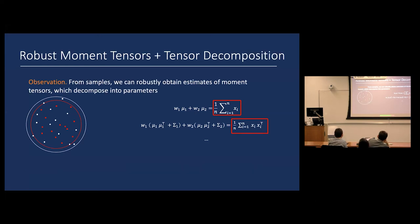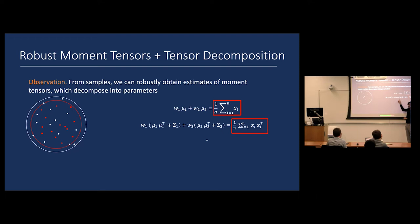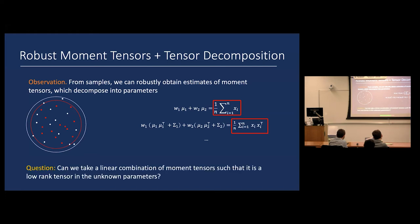Our observation is that you can estimate the right-hand sides of the moment equations robustly. If you look at the left-hand side — the Hermite tensors — these are only a function of the parameters we want to learn. One could hope to run a density decomposition algorithm to recover the parameters. That's our meta-approach: run a density decomposition algorithm. The question is whether we can take a linear combination of these tensors so that vanilla density decomposition can read out the parameters.